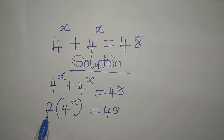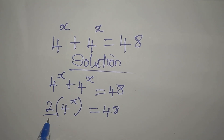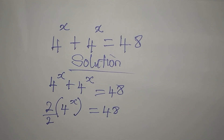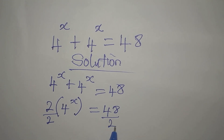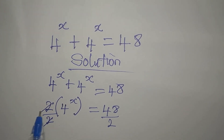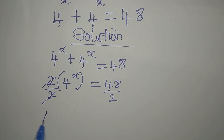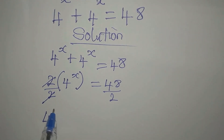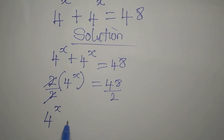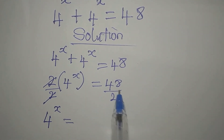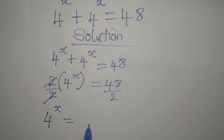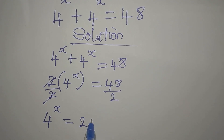Now we can remove the 2 by dividing both sides by 2. This goes away, and now 4 to the power of x is alone and it's equal to 48 divided by 2, which gives us 24.